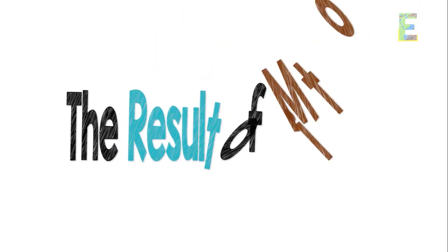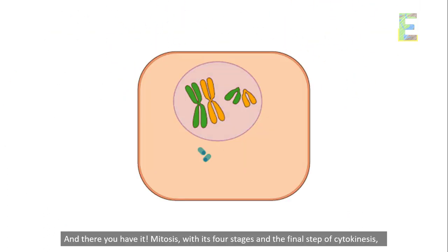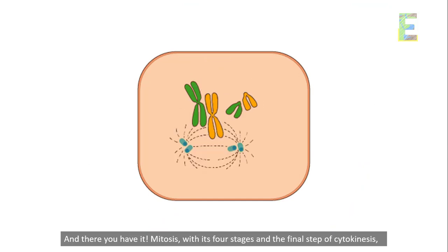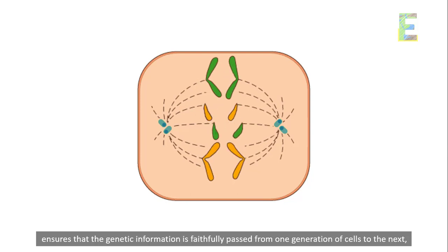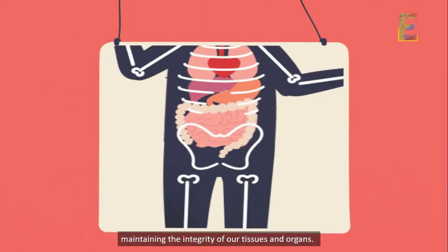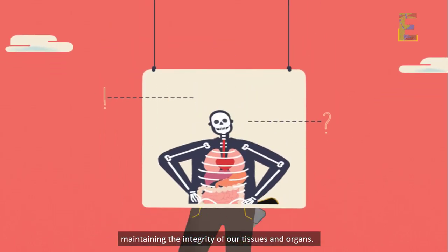The result of mitosis, and there you have it. Mitosis, with its four stages and the final step of cytokinesis, ensures that the genetic information is faithfully passed from one generation of cells to the next, maintaining the integrity of our tissues and organs.